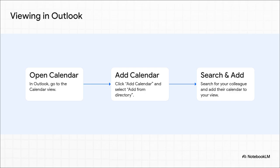Inside Outlook, the process isn't too complicated. You go to add a calendar from your company directory, search for your colleague, and then add their calendar to your view. This is where you can finally see all the juicy details — assuming they've shared them with you, of course.